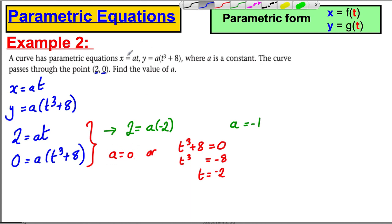So a is either equal to negative 1 or 0. Now, a can't be 0. If a is 0, you've just got the curve x is 0, y is 0. There's no sort of curve there. That's just a point. It's not a curve. So a can't be 0, so you're just going to ignore this. But if a equals negative 1, you actually get the parametric equation x equals negative t and y equals negative t cubed plus 8.